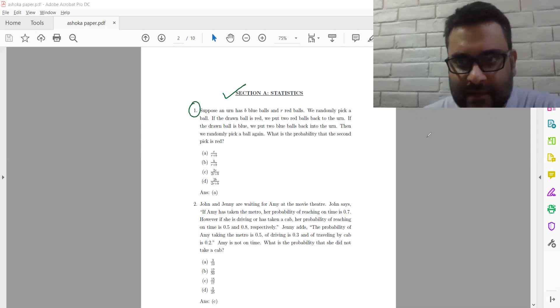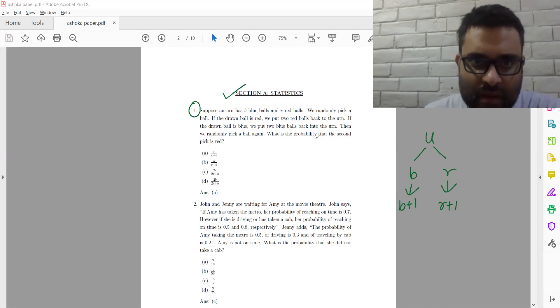Suppose an urn has B blue balls and R red balls. We randomly pick a ball. If the ball drawn is red, then we put two red balls back to the urn. So one red and plus one. Similarly, if the ball drawn is blue, then we put two blue balls back into the urn. So blue and plus one. Then we randomly pick a ball again. What is the probability that the second ball is red?